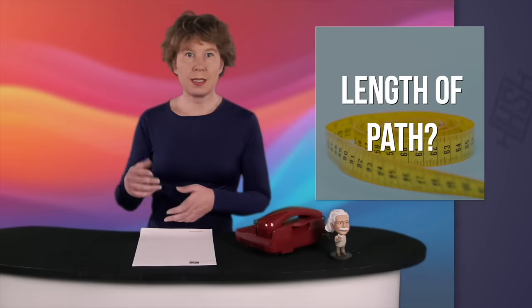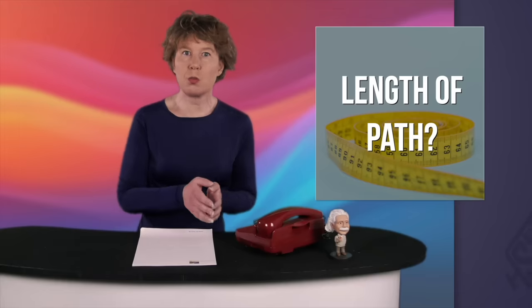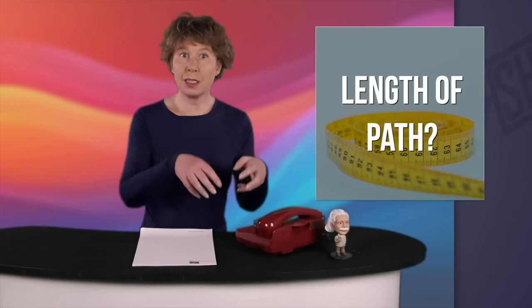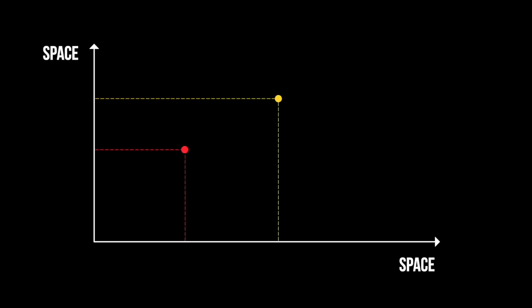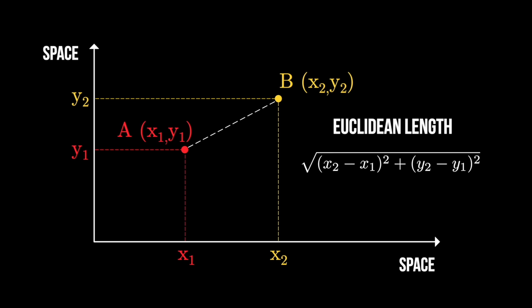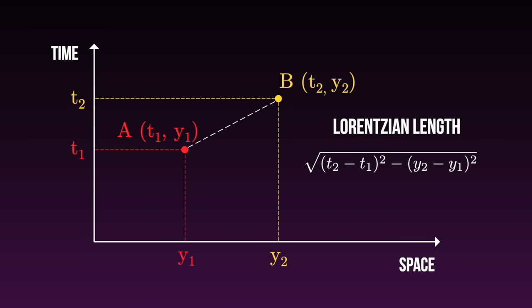This is where things get a bit complicated, because the length of a path in spacetime is not calculated the same way that we calculate the length of a path in space. Somehow it must matter that it's spacetime and not space and more space. If it was just space, we'd use what's known as the Euclidean distance: suppose the two coordinates are x and y; if you have a straight line, you take the distance between the initial and end points in each direction, square them, and then take the square root of the sum. In spacetime, you take the square of the distance in time, but subtract the distance in space. This is known as the Lorentzian distance.